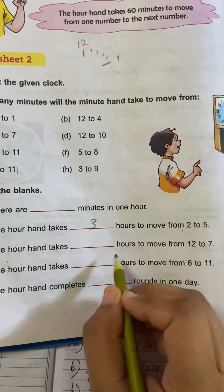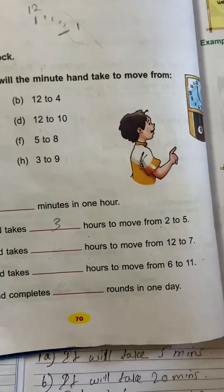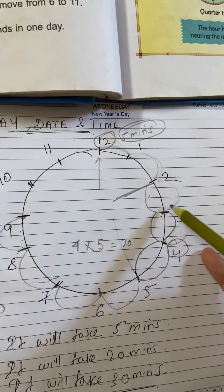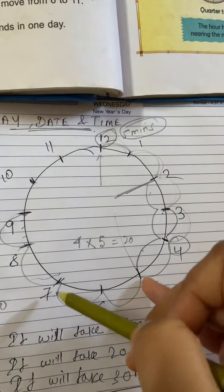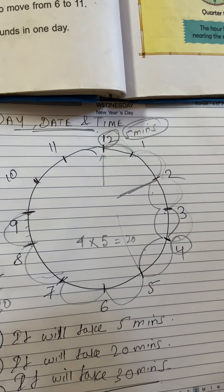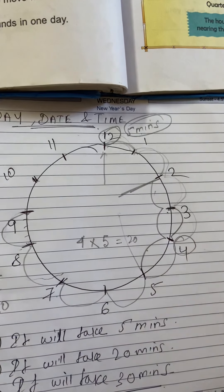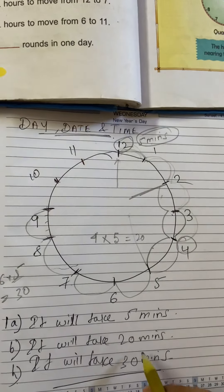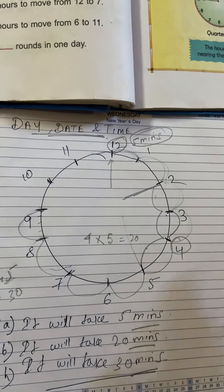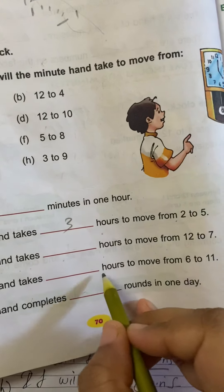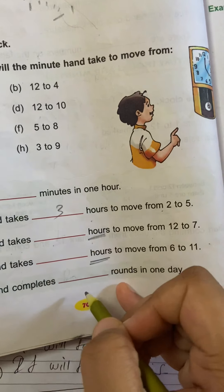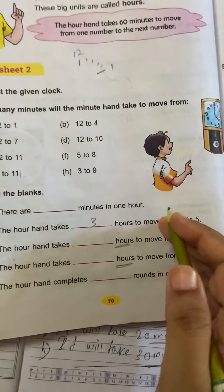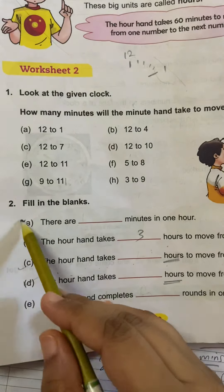The hour hand takes dash hours to move from 2 to 7. Just count how many intervals are crossed — that many hours it will take. We do not multiply by 5 here because we were multiplying by 5 only when the answers were needed in minutes. Here the answers are in hours only, so we don't multiply by 5. You will do these 2-3 questions on your own.